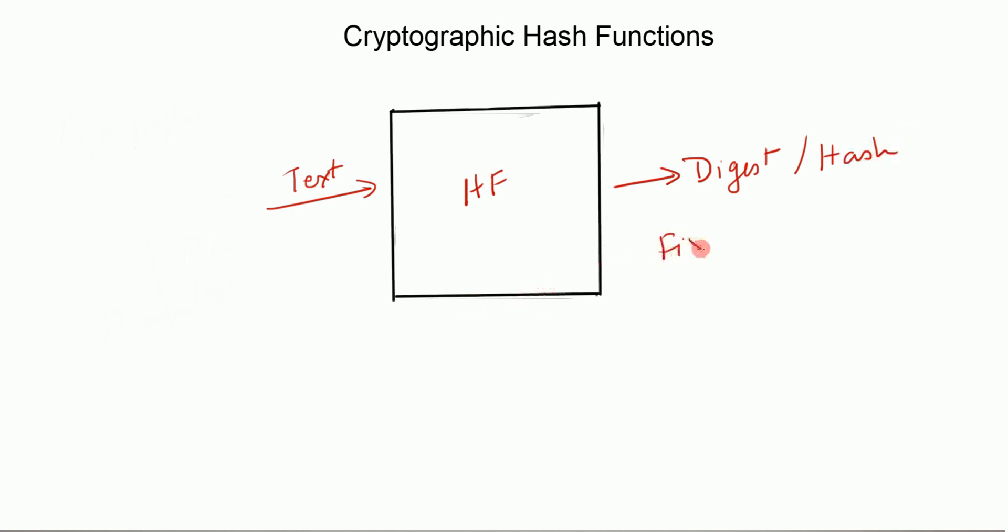What I meant by fixed length is that even if the size of the input text is changed, the output text or the digest or hash would be of the same length for a particular hash function. Now it should be easy to convert the input to its digest but not vice versa.